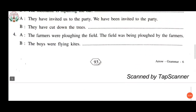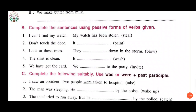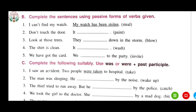For questions seven through ten, try to do them on your own. Now the next exercise: complete the sentence using passive forms of verbs given. The first one is already done as an example — 'I can't find my watch' has been changed to 'My watch has been stolen.' 'Steal' changes to 'stolen' using 'has been' for present perfect.